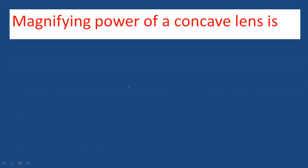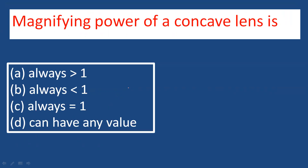What is the magnifying power of a concave lens? A concave lens is a diverging lens. The image formed by a concave lens is always virtual, erect, and diminished. Therefore, the magnifying power is always less than 1. Option B is the correct answer.